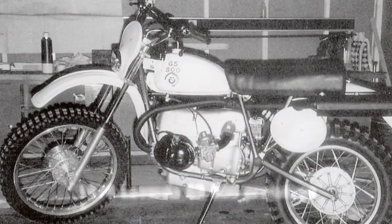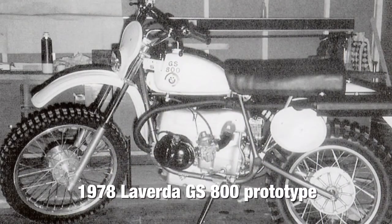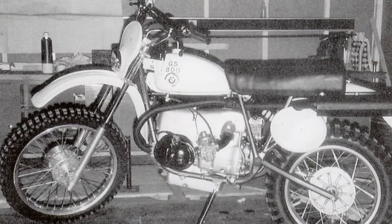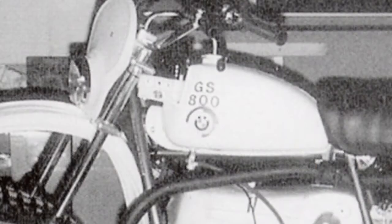In 1978, the Italian company La Verda developed a prototype for BMW. It was known as the GS 800.